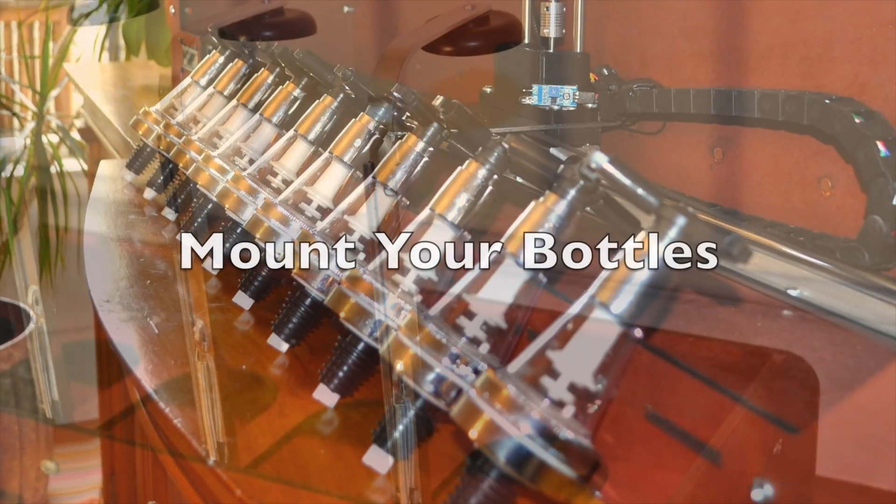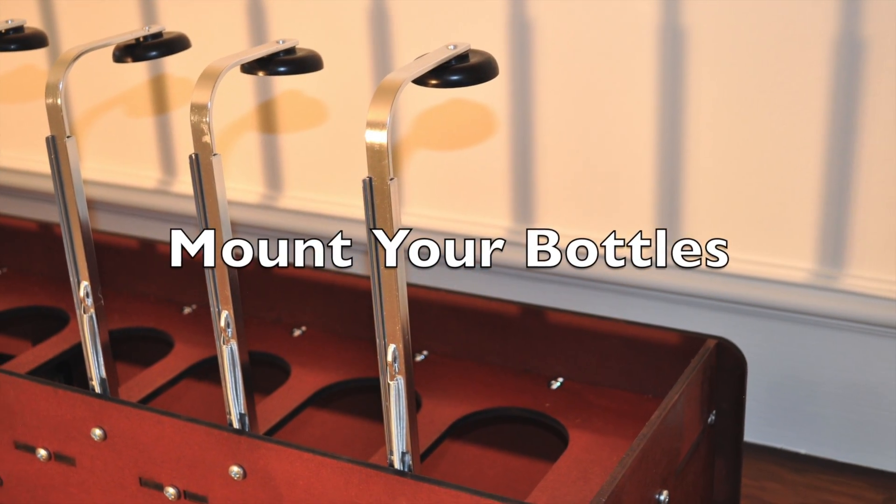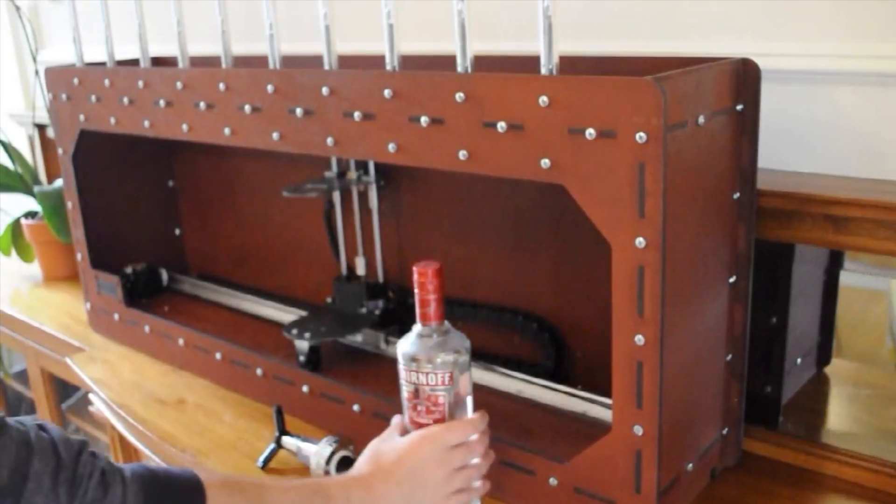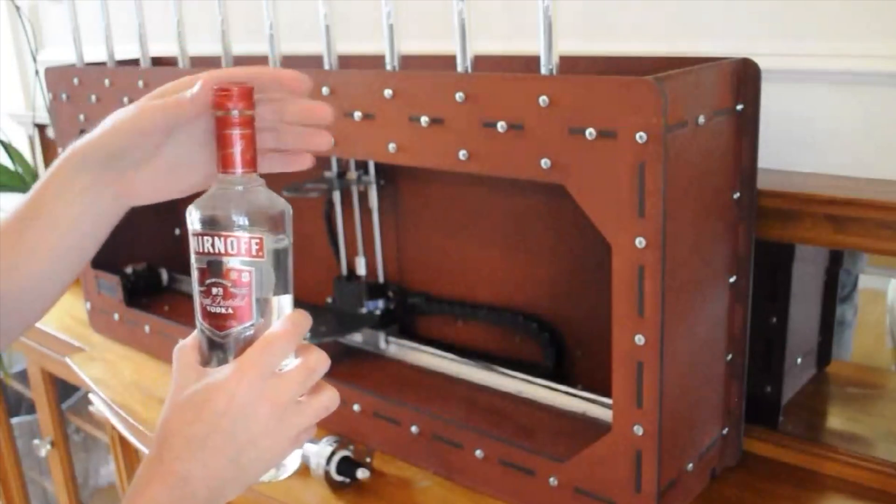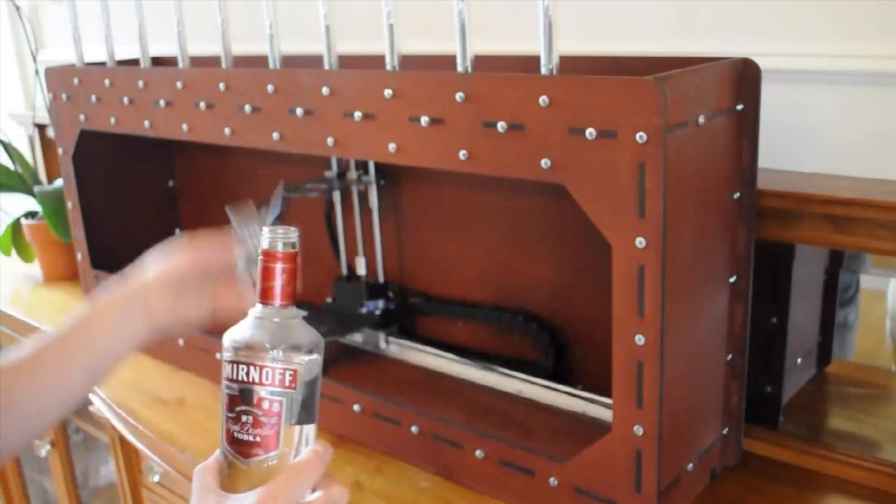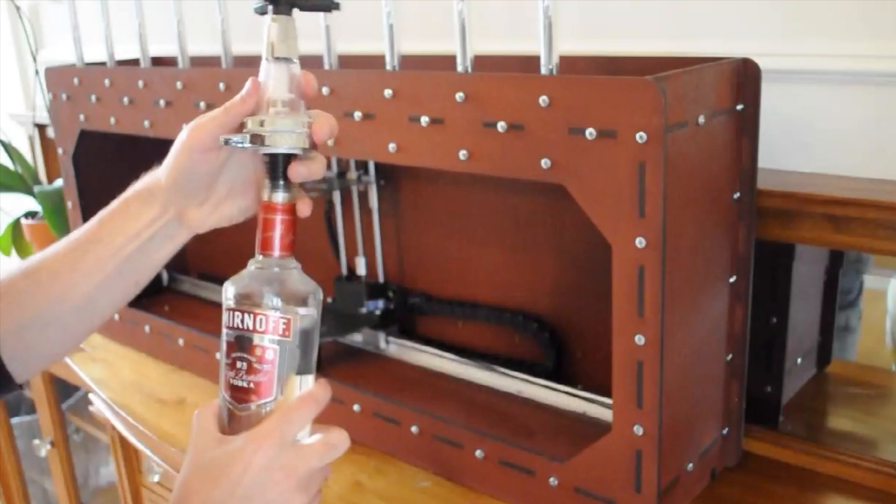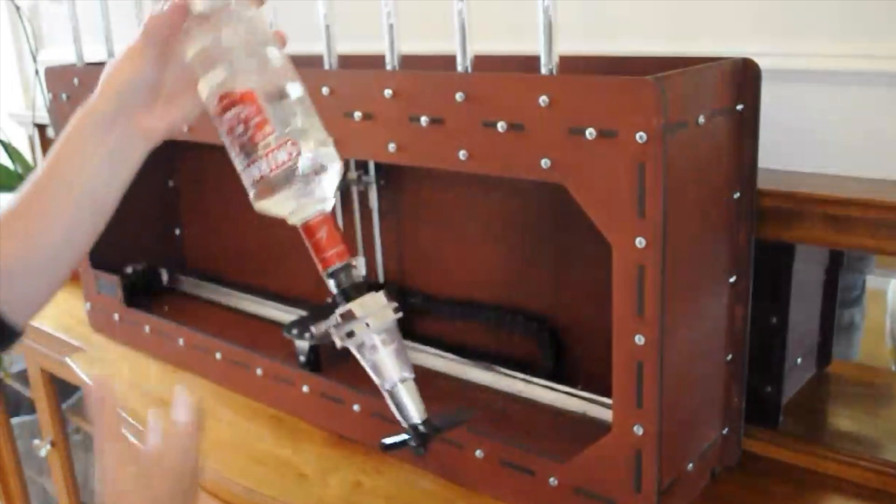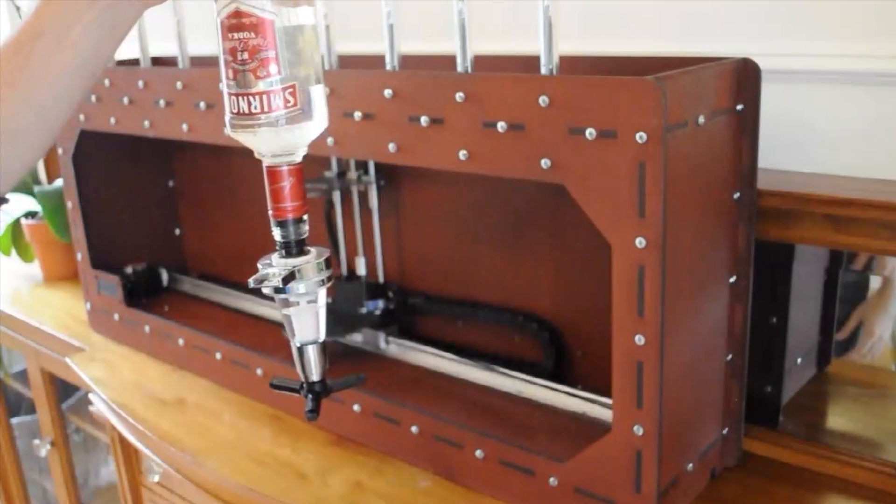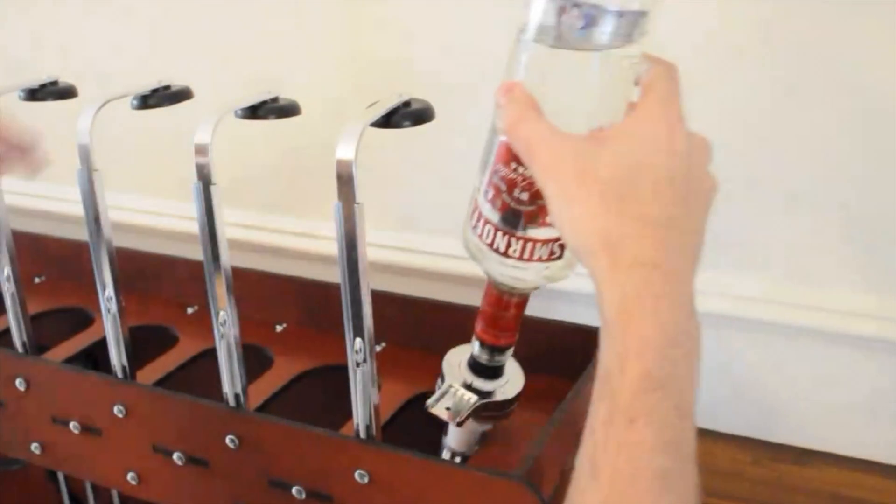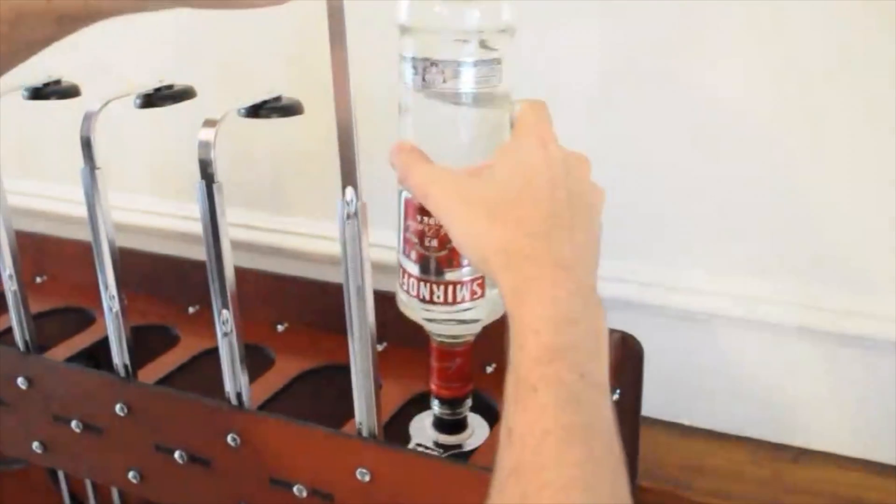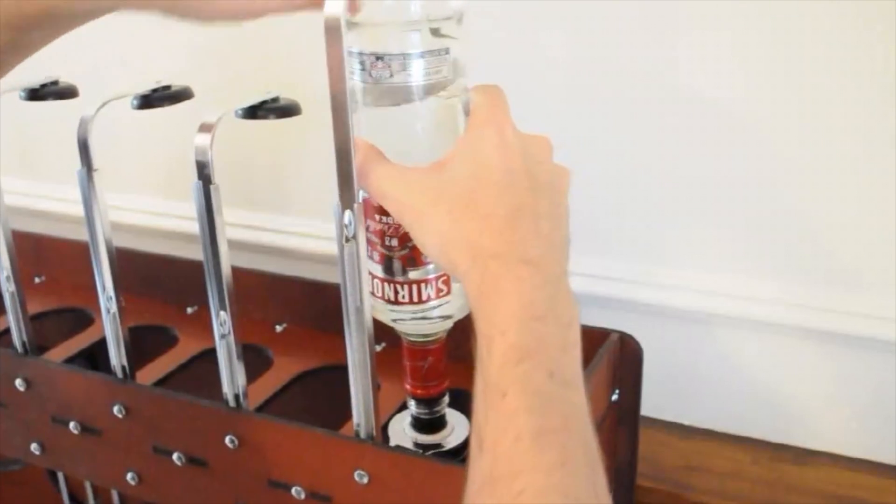Step one is to choose your ingredients and mount your bottles. Each bottle is simply mounted by removing the cap, attaching the dispenser, and turning it over to fill the chamber. From there the bottle and dispenser are inserted from above, with a tensioner holding the top and a spring-loaded pin on the bottom.